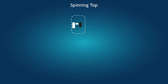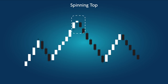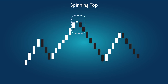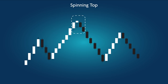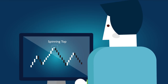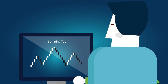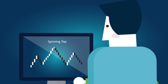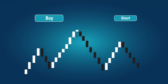Spinning Top: a bearish pattern. At the pattern's peak is a narrow-range candle with two tails, followed by a black candle that falls at least halfway below the body of the clear candle preceding the narrow-range candle. However, there is little point in learning patterns if you do not know when to press the Buy or Short button.